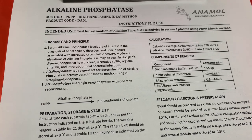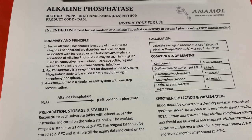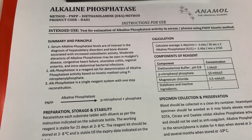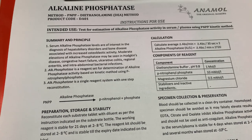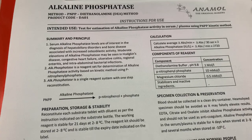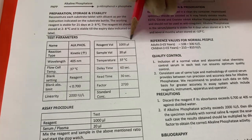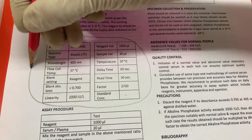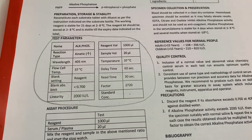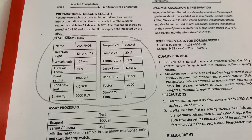Hello everyone. In this video tutorial we will see how to program an alkaline phosphatase kit on any semi-automated biochemistry analyzer. Please note that in this video we are using the kit manufactured by Anamol Laboratories Private Limited. Whatever information is required to program the software has been mentioned in the instructions for use by the manufacturer. Using this information you can program any semi-automated biochemistry analyzer. Let's see how we can do it.